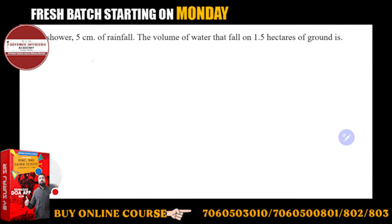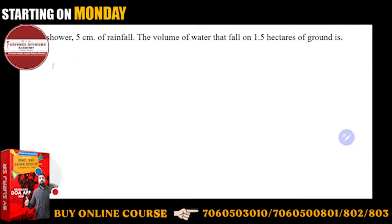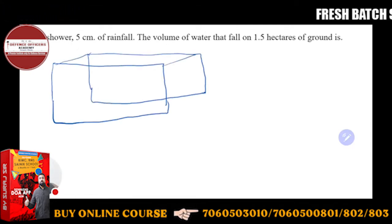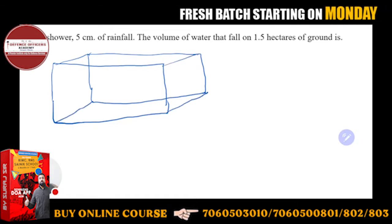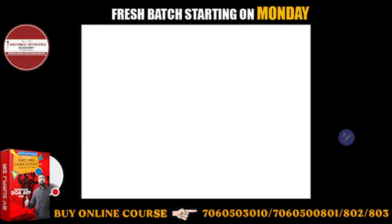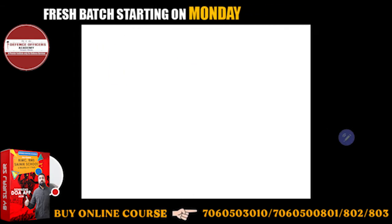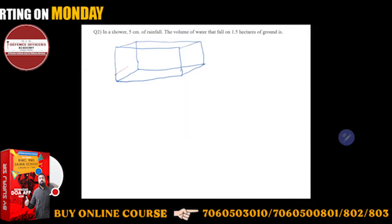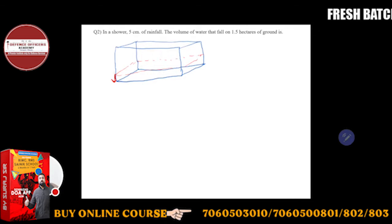Suppose I need to make a container. Let me make one container for you. If this is a container, suppose this is a container. If this container is in the air or water, it is 5 cm. So the level of the water is 5 cm.